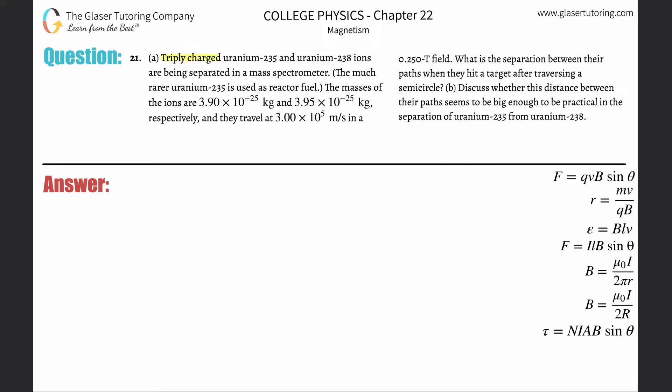Number 21: A triply charged uranium-235 and uranium-238 ions are being separated in a mass spectrometer. The masses of the ions are 3.9 times 10 to the minus 25 kilograms and 3.95 times 10 to the minus 25 kilograms respectively, and they travel at 3 times 10 to the 5 meters per second in a 0.25 Tesla field. What is the separation between their paths when they hit a target after traversing a semicircle?